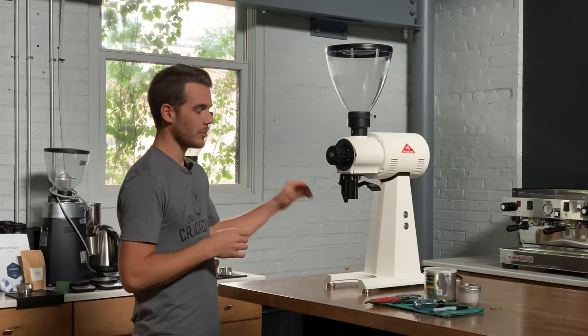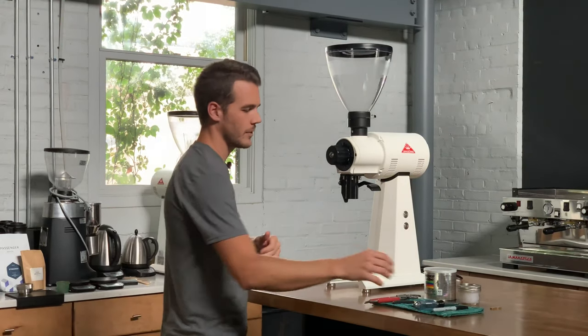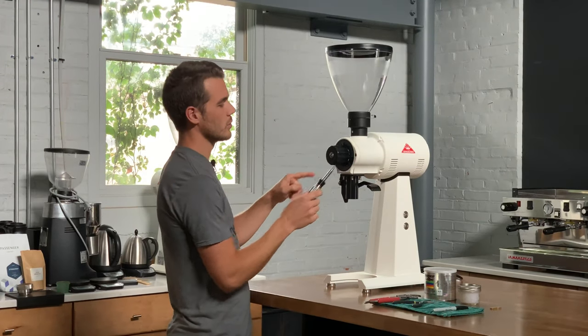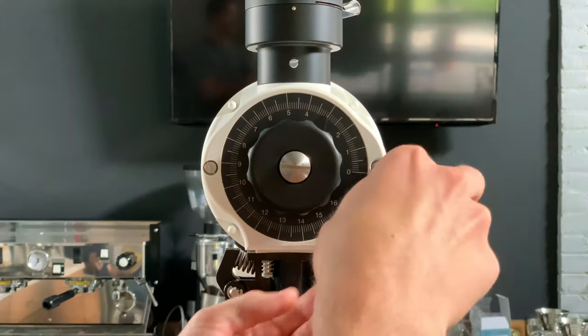Before we start this process, you're going to want to unplug the grinder. Then we can take our screwdriver and remove these two screws on the face plate, and then the whole face plate is going to come off.